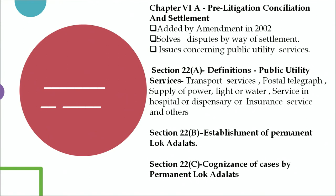For pre-litigation conciliation and settlement, only issues concerning public utility services are fit for reference. Section 22A defines the concept of public utility services — anything concerning transport service, postal, telegraph, supply of power, light or water, service in hospital or dispensary, insurance service, and others can be referred to this mechanism as they are in the nature of public utility services. Section 22B states that there should be a permanent Lok Adalat established, and Section 22C lays down the procedure for cognizance of cases by the permanent Lok Adalat.